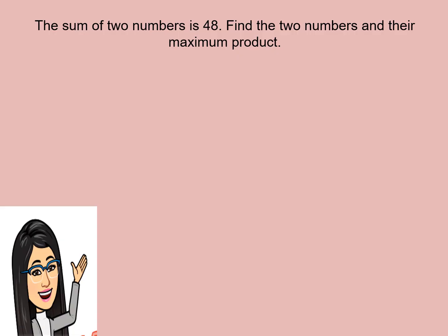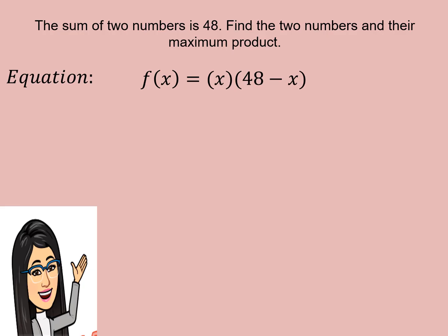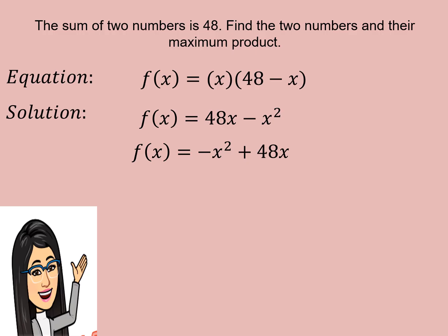Now let us write the equation. f(x) is equal to X times (48 minus X). We can solve it by the distributive property, and we will get f(x) is equal to 48X minus X squared, which we can rewrite in the form f(x) is equal to negative X squared plus 48X. Let us identify the coefficients: A is equal to negative 1, B is equal to 48, and C is equal to 0.